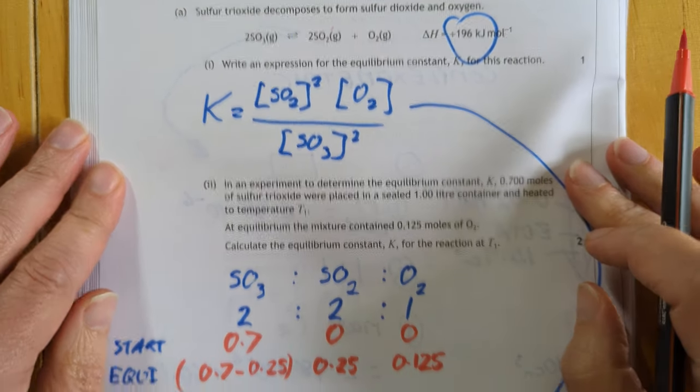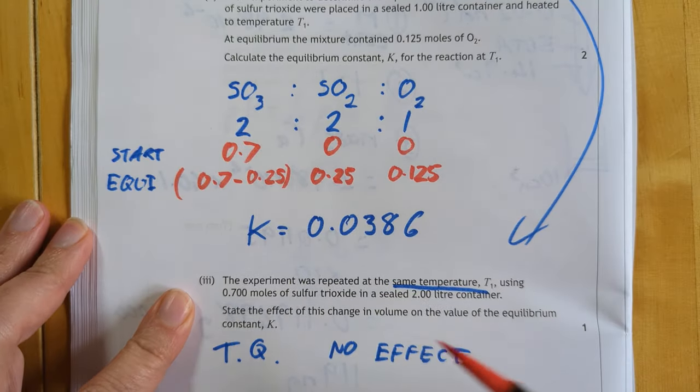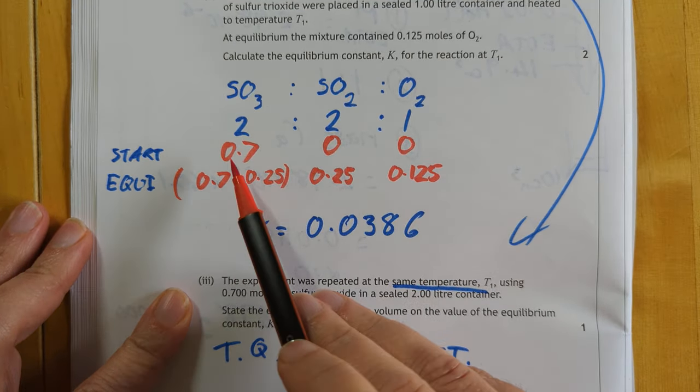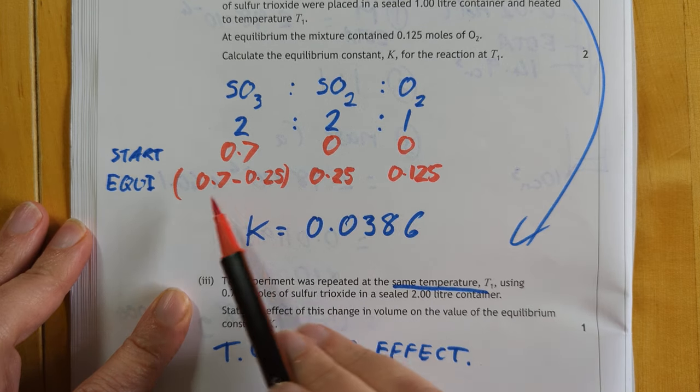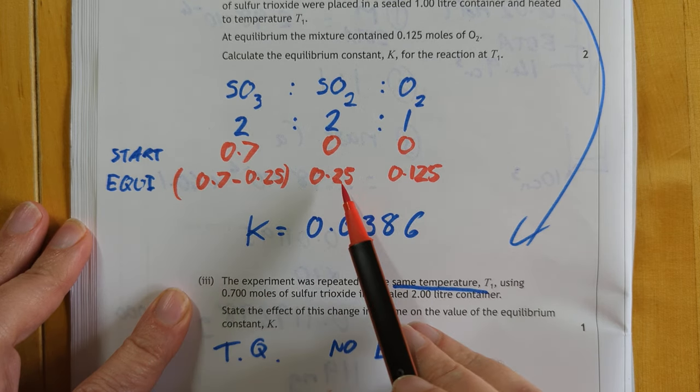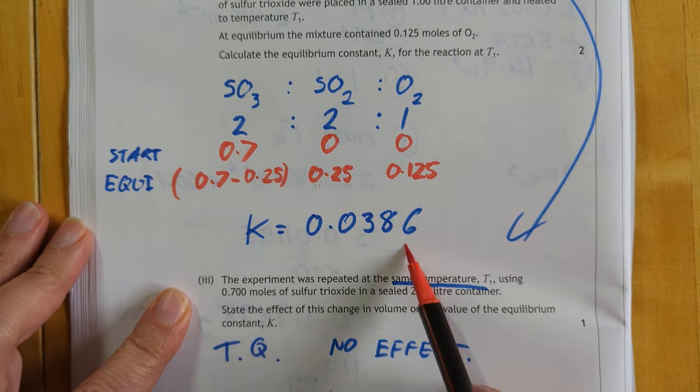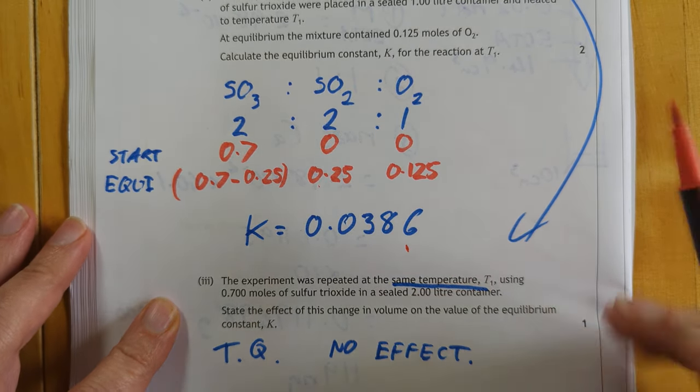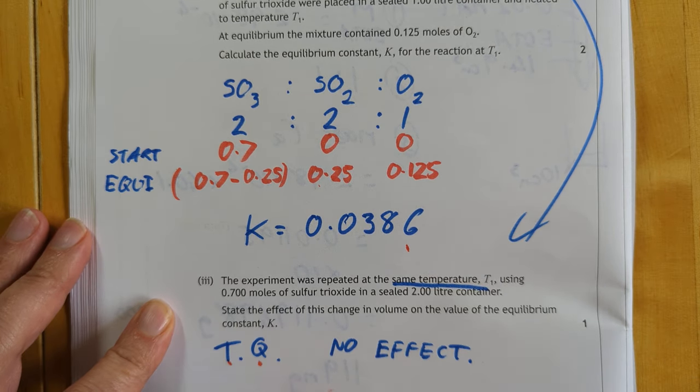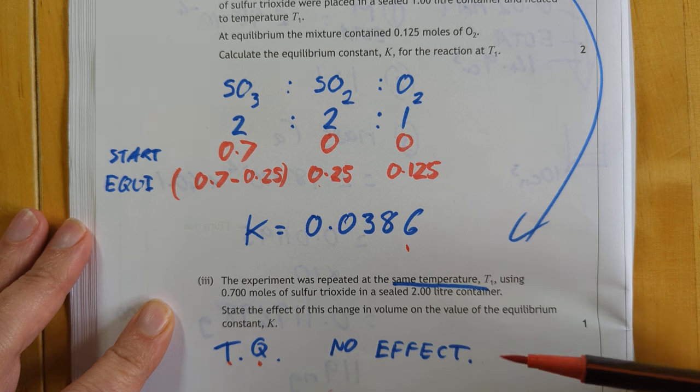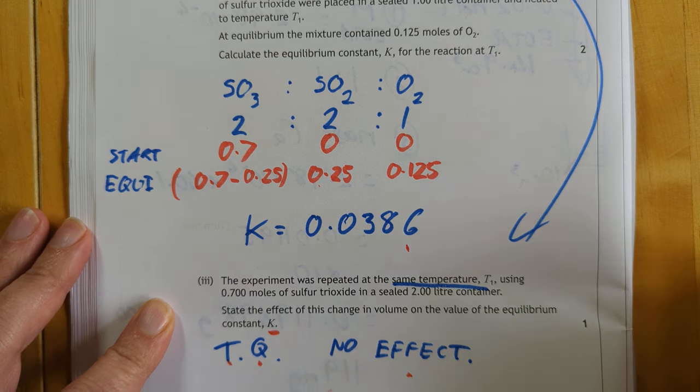That's the expression, raise it to the correct powers of course. Here's my calculation for the value of K. I got that from this process here. Here was the starting situation, here's the situation at equilibrium. Do a little subtraction based on the fact that you've created 0.25 moles of this, you must have used up 0.25 moles of this, and that's the number I get for K. No units of course. This is not a trick question but it's the classic one they sometimes ask. The only thing that changes K is temperature, and we haven't changed the temperature. So no effect.